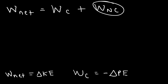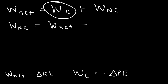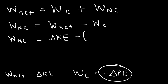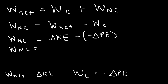So what is the work done by all of the non-conservative forces? If we subtract Wc from both sides, the work done by all non-conservative forces is the difference between the net work done on the object and the work done by all the conservative forces. Since net work equals the positive change in kinetic energy, and the work done by conservative forces equals the negative change in potential energy, the work done by all non-conservative forces equals the change in kinetic energy plus the change in potential energy.